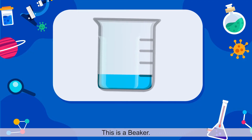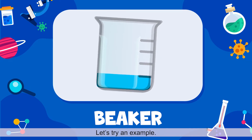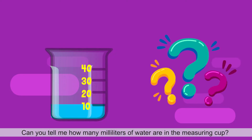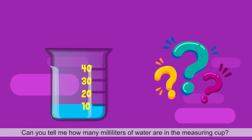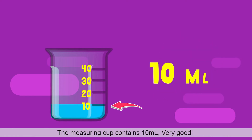This is a beaker. This tool helps us measure the volume of things, or how much space a substance takes up. Let's try an example. Can you tell me how many milliliters of water are there in the measuring cup? The measuring cup contains 10 milliliters. Very good!